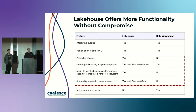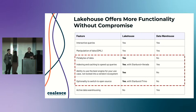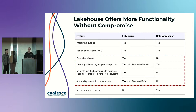Being able to use the best engine is really, really important. And optionality to switch to open source — there are some lakehouse vendors out there that are not open source. We want to add functionality and features on top of open source, but if you want to use open source, that's great. The idea with Starburst is that Trino is a great open source engine — it used to be called Presto, created at Facebook. The big difference with Starburst is really just trying to make sure that open source project stays alive and community-driven, while we add a lot of value on top of that as well.